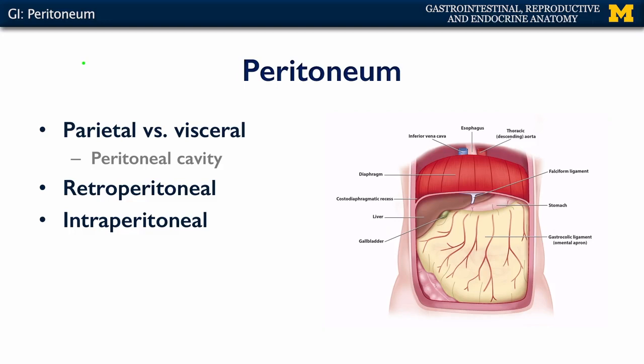Much like other serous membranes, there are two distinct components to the peritoneum. There's the parietal peritoneum, which lines the walls of the abdominal pelvic cavity, and then the visceral peritoneum, which surrounds the organs of digestion and other organs within the abdominal pelvic cavity.